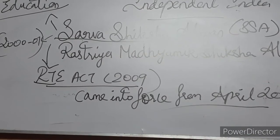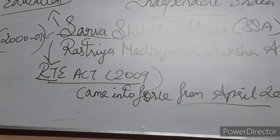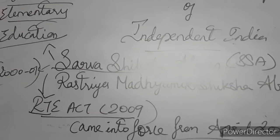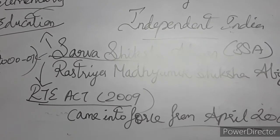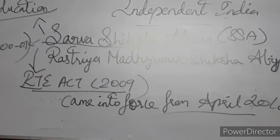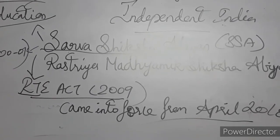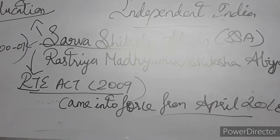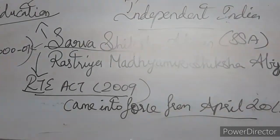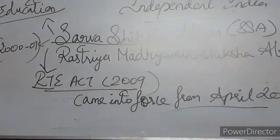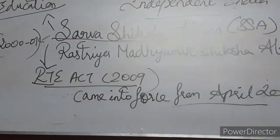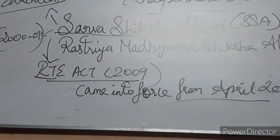The Union Budget of 2018-19 also proposed to give school education holistically without segmentation from preschool to class 12 — called Samagra Siksha — to improve school effectiveness measured in terms of equal opportunities and equal learning outcomes. It subsumed SSA and RMSA. In 2017, a committee was constituted by the Ministry of Human Resource Development to draft the National Education Policy. The report was submitted and came into force from April 2020.